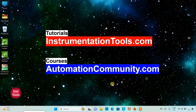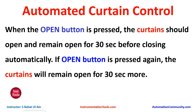Hello friends, welcome to Automation Community. Today in this video we are going to discuss an example about automated curtain control. When the open button is pressed, the curtains should open and remain open for 30 seconds before closing automatically. If the open button is pressed again, the curtains will remain open for 30 seconds more.